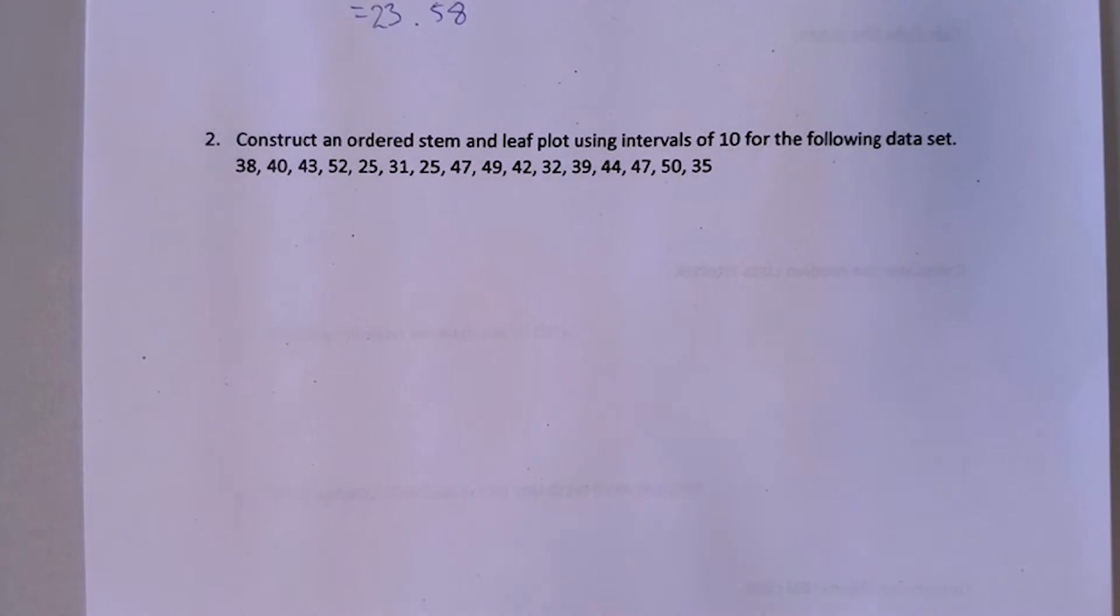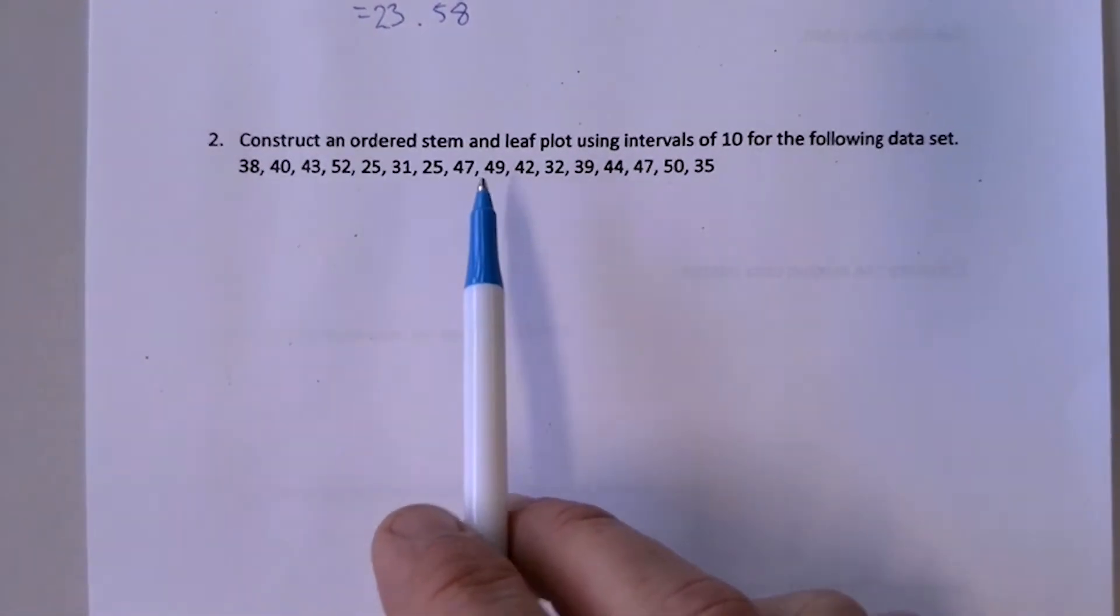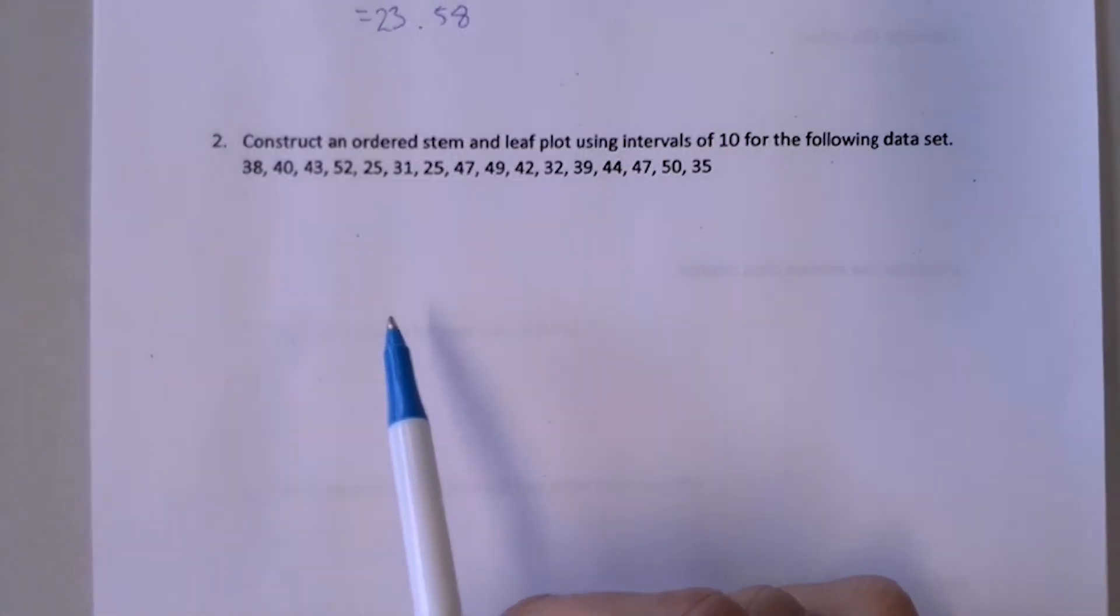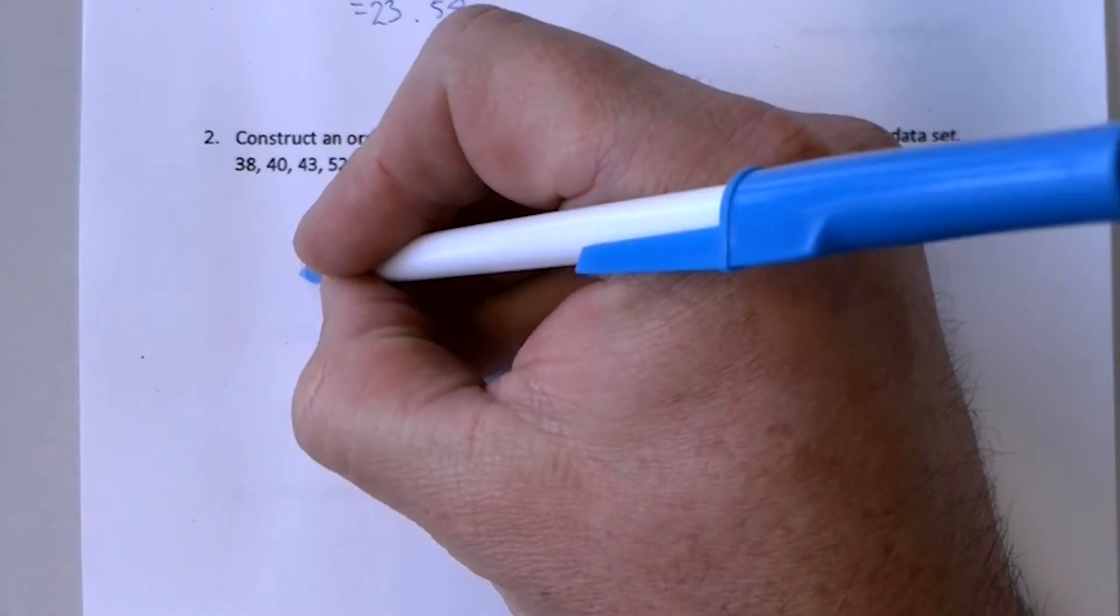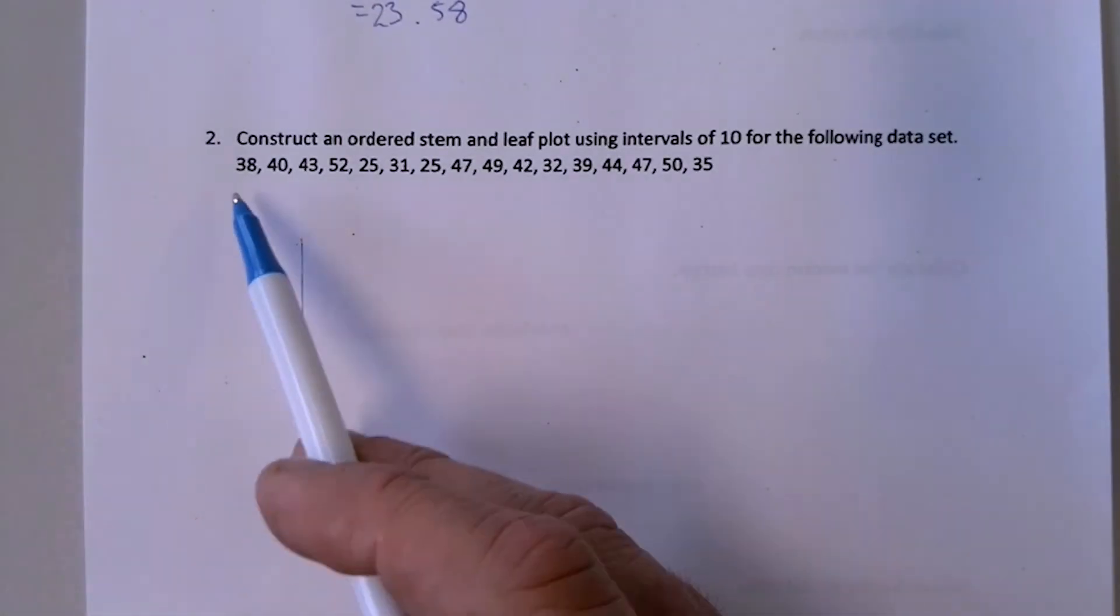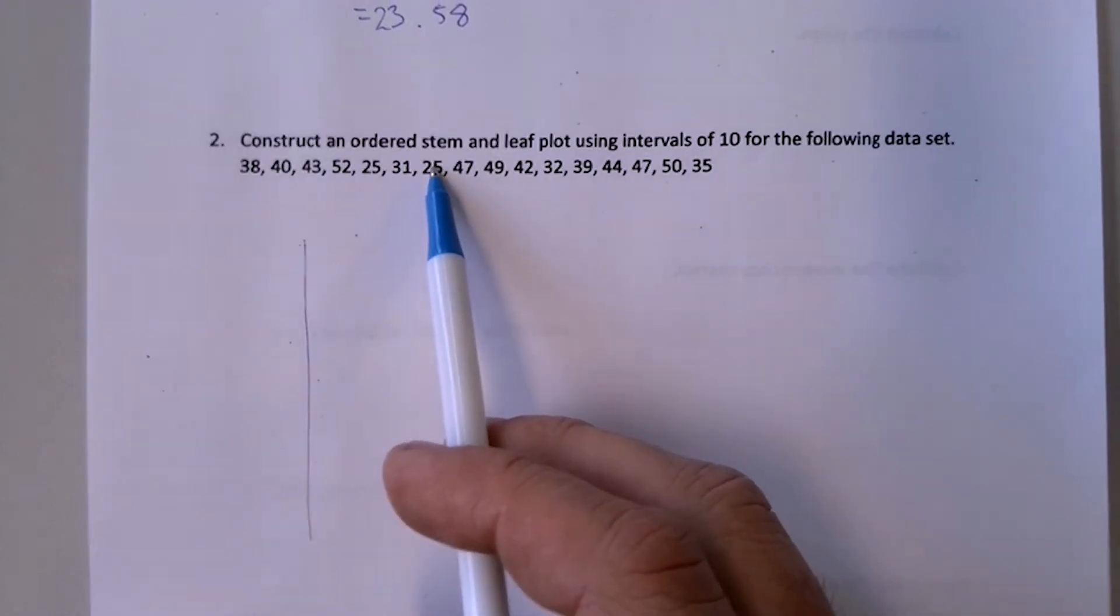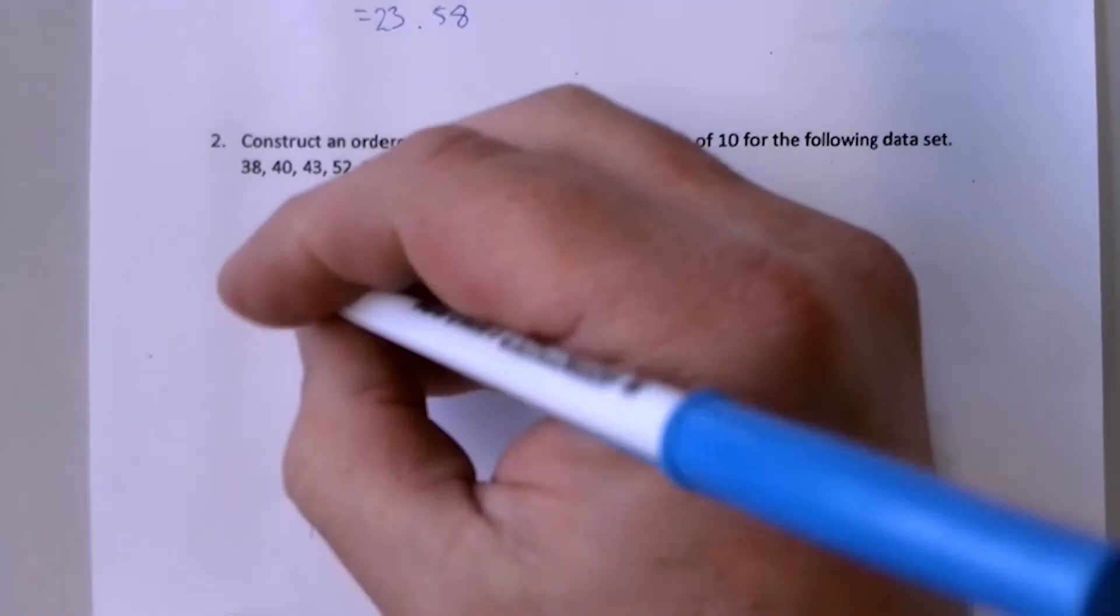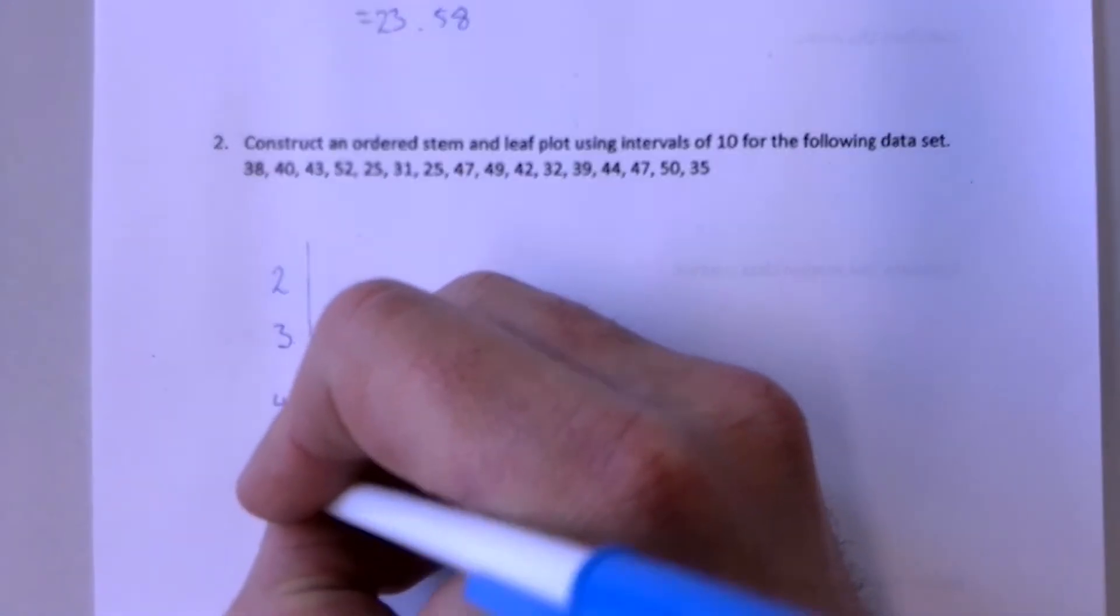Question two is asking you to construct an ordered stem and leaf plot using intervals of 10. Now this is a more efficient way of dealing with the data than in the previous question. So what you'll do is you'll need to create yourself a stem and leaf plot. And before I start this, I'm going to scan through and see if I've got any 10s. I don't. I've got 20s. And by the look of it, I've got them through to 50s. So I will have 20s, 30s, 40s, and 50s.